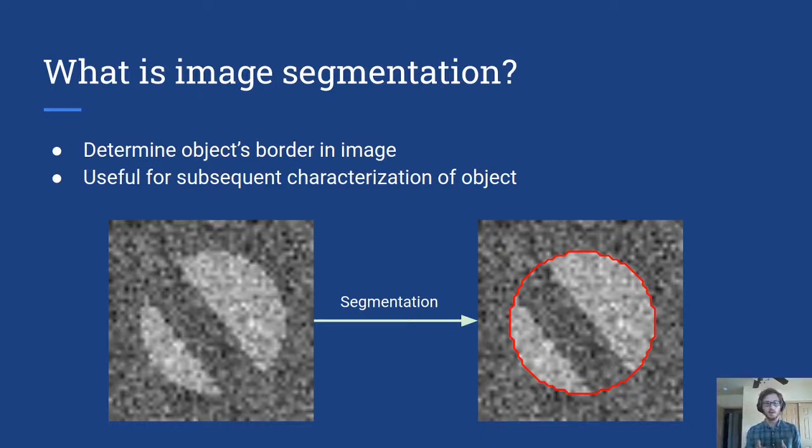Image segmentation plays a very important role in image analysis. So for example in medical imaging, let's say that you are finding the boundary of a tumor. Well then that enables you to calculate the volume of the tumor or maybe the spikiness of the boundary, things that are medically useful.